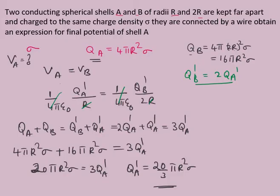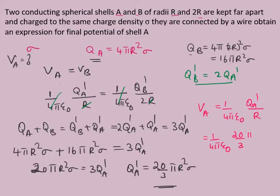Now we calculate the final potential: VA = (1/4πε₀)(QA'/R) = (1/4πε₀) × (20πR²σ/3) / R. Simplifying, the 4π cancels with 20π to give 5, and R cancels, leaving VA = 5σR / (3ε₀). This is the final answer.